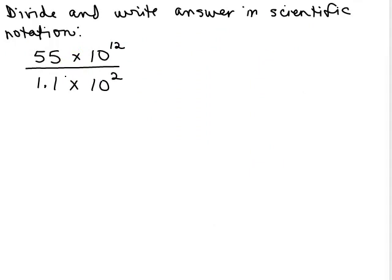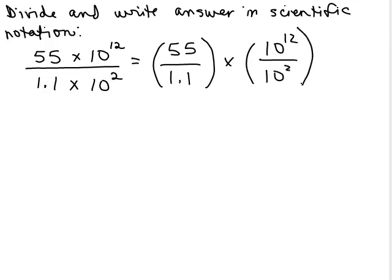Here's another problem: 55 times 10^12 over 1.1 times 10^2. You might notice the numerator is not even in scientific notation, but that's okay. We could put it in scientific notation, but you don't need to. We could split this up and write 55 over 1.1 times 10^12 over 10^2. By the way, this is not the only way to get the answer.